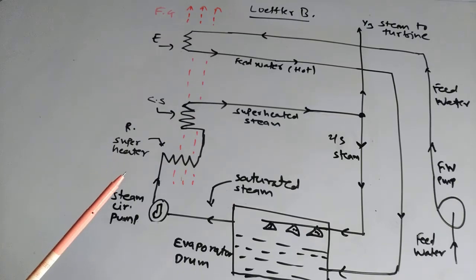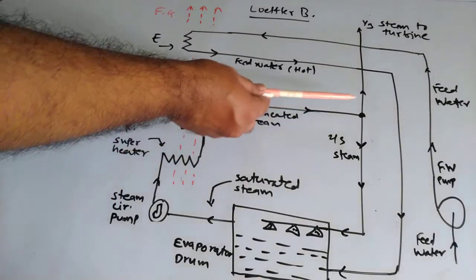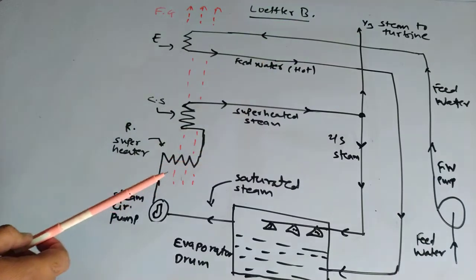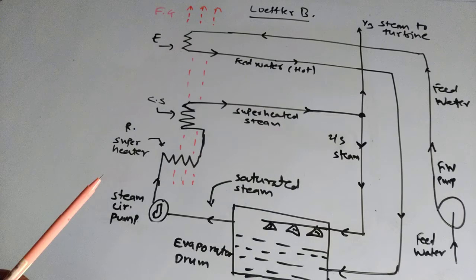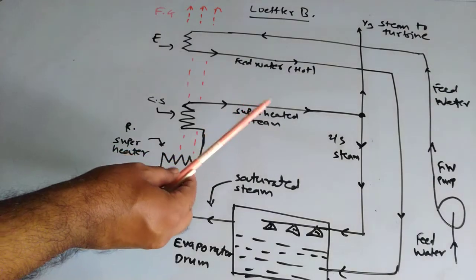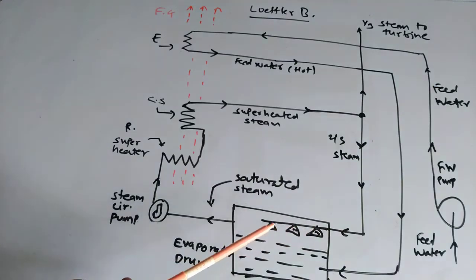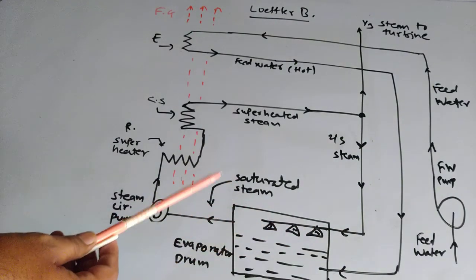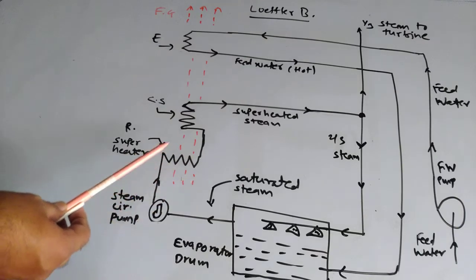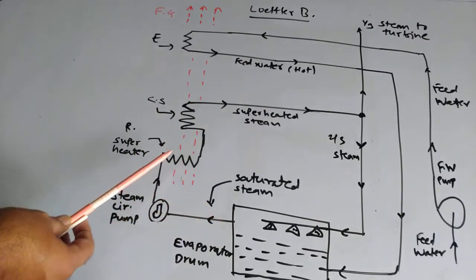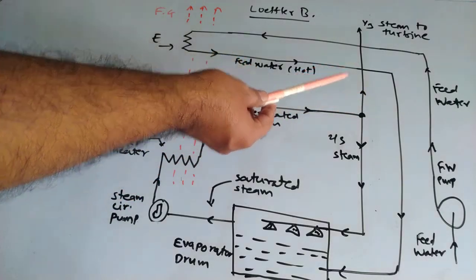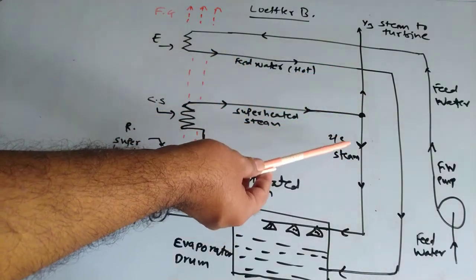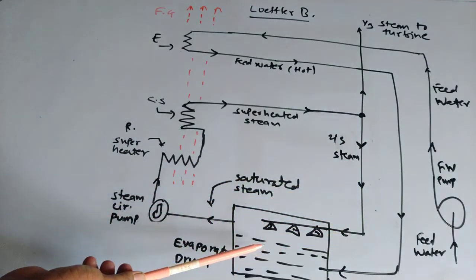The superheated steam sent to the turbine is utilized for the generation of electricity. Only one third of the steam is supplied to the turbine, and the remaining two thirds of the superheated steam goes back towards the evaporating drum.